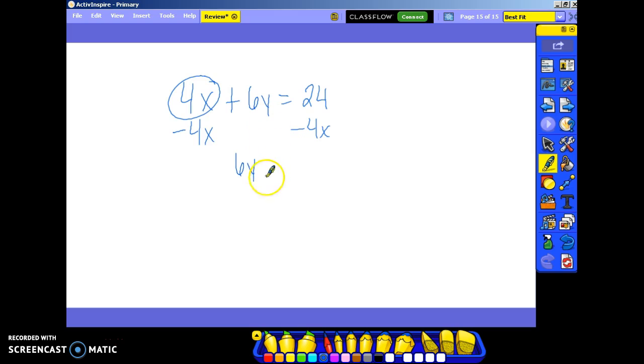That leaves me with 6y on the left. I cannot combine 24 and negative 4x, so I have to just write them beside each other, because there's nothing I can do with that. Now, to get rid of this 6, I have to break up the 6 and the y. I'm going to divide by 6 on both sides. That leaves me with my y. My y is finally by itself.